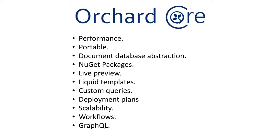Orchard Core CMS is a complete rewrite of Orchard CMS on ASP.NET Core — it's not just a port. Performance may be the most obvious change: it's extremely fast for a CMS, about 20 times faster than the previous version without caching. It's also portable — you can develop and deploy on Windows, Linux, and macOS, with Docker images ready for use. Orchard Core CMS uses a Document Abstraction called YesSQL that provides a document-based API for storing and querying, compatible with SQL Server, MySQL, PostgreSQL, and SQLite.